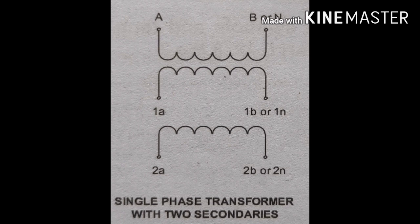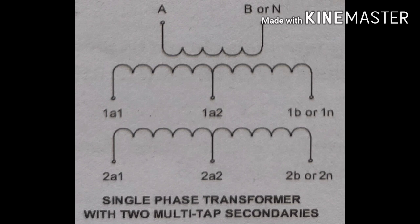This is a single-phase PT with a single-phase end. It is very simple with two cores — we have two separate secondary coils. In this case, there are two secondary tapping sides: 1A1 and 1A2 for the first core tapping, and 2A1 and 2A2 for the second core tapping.